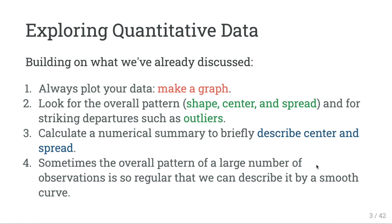This is going to build on what we've already discussed, where we've talked about always plotting your data, looking for the overall pattern like the shape, center, and spread of any distribution, and looking for outliers — as well as calculating numeric summaries to describe the center and spread, like we did with the five-number summary, box plots, things like that.